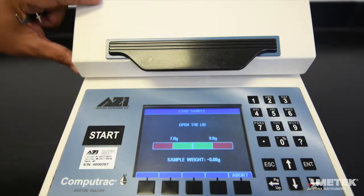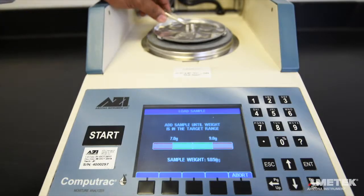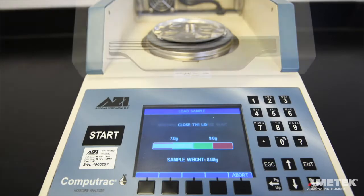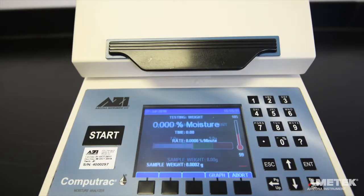Open the lid and use the tweezers to carefully place both the three and five gram weights in the center of the pan. After you have added both weights and the total weight registers within the green part of the graph, follow the on-screen instructions and close the lid. The instrument will then determine the initial weight of the sample and then start the test and return to the main screen.